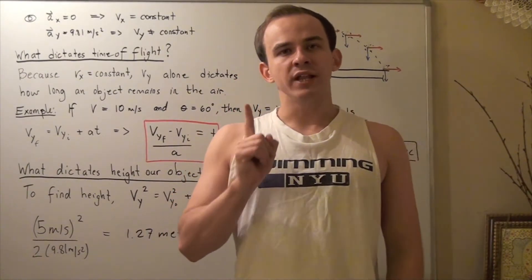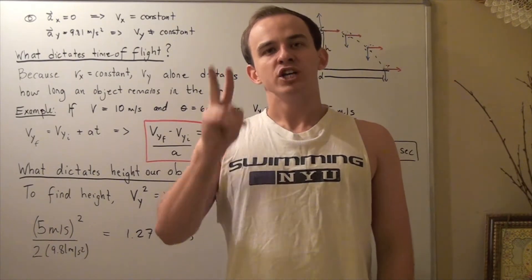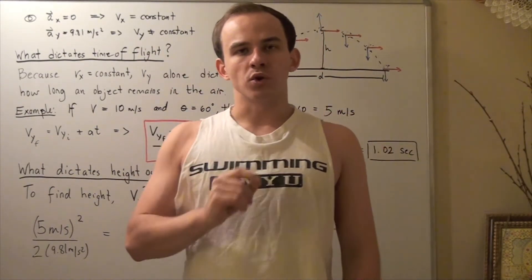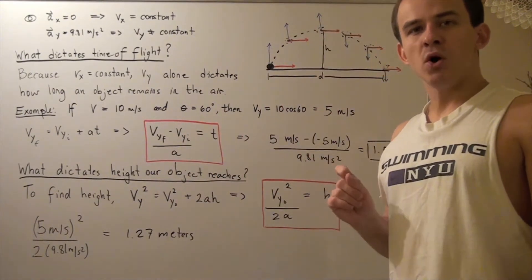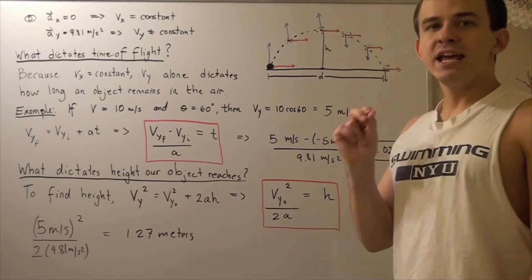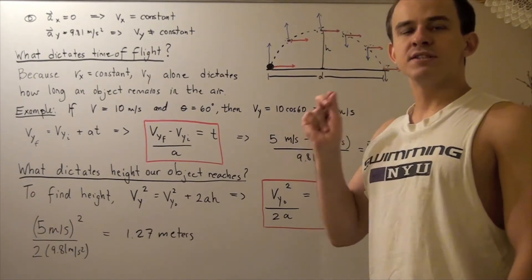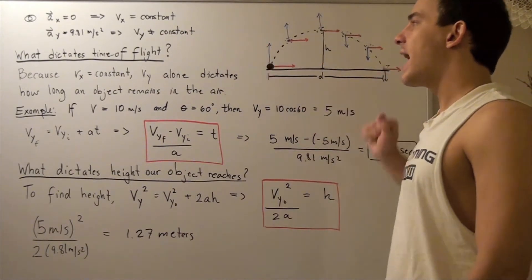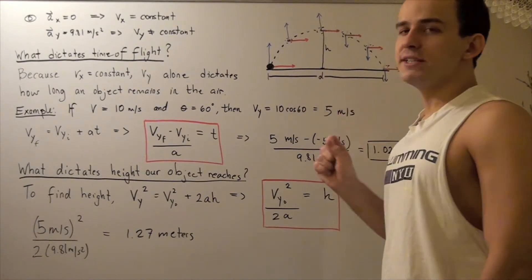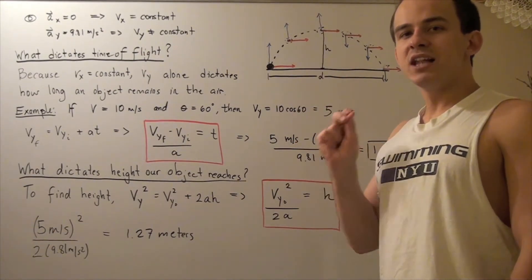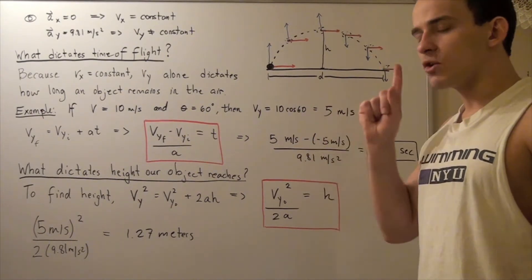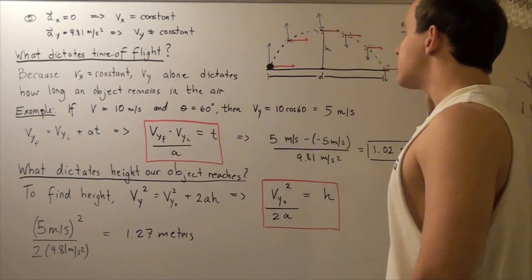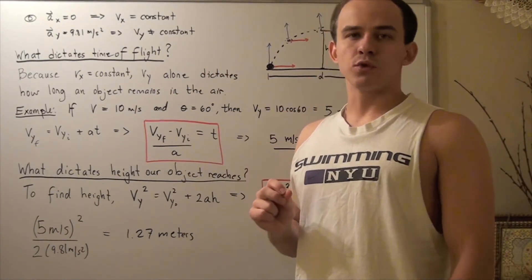Any object traveling in parabolic projectile motion will always have two components of velocity: one pointing along the y-direction, and one pointing along the x-direction. If we take an object undergoing projectile motion along a parabolic curve and choose any point along this curve, we will be able to find two components of velocity — one along the y-direction and one along the x-axis. Similarly, we can find two components of acceleration, because acceleration is also a vector. So we have a component of acceleration along the x-direction and a component along the y-direction.